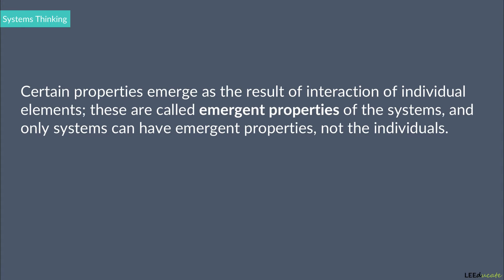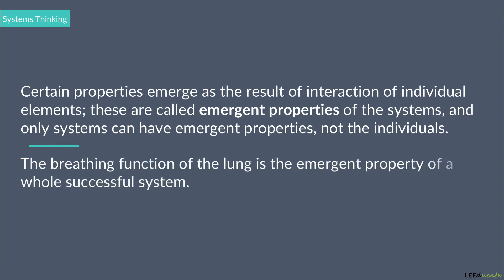Certain properties emerge as the result of interaction of individual elements. These are called emergent properties of the systems, and only systems can have emergent properties, not the individuals. The breathing function of the lung is the emergent property of a whole successful system. This is why systems thinking requires the creation of emergent properties to achieve rewarding outcomes. To take the discussion to the next level, we will now examine feedback loops, followed by leverage points.